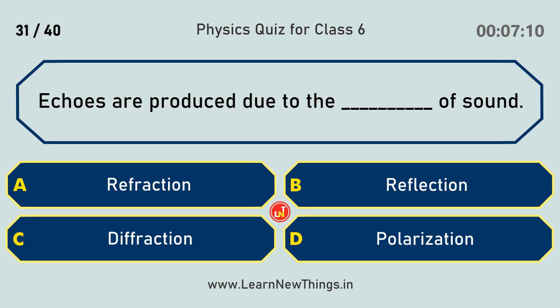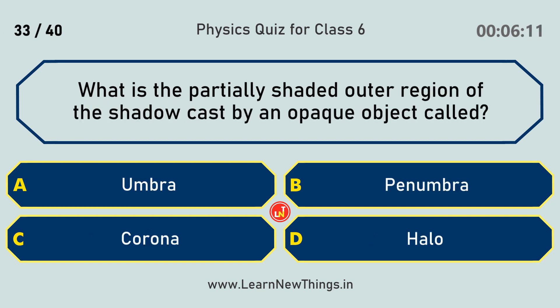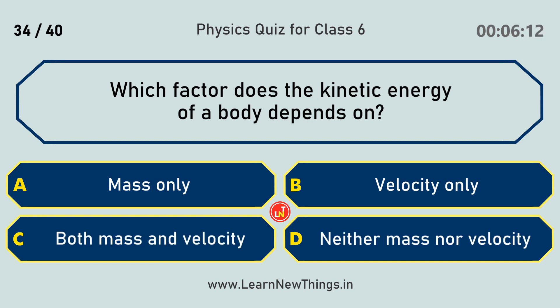Echoes are produced due to the reflection of sound. Which of the following statements is correct? One metre equals 100 centimetres. What is the partially shaded outer region of the shadow cast by an opaque object called? Penumbra. Which factors does the kinetic energy of a body depend on? Both mass and velocity.